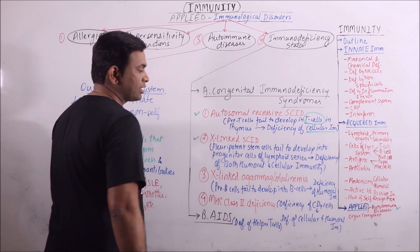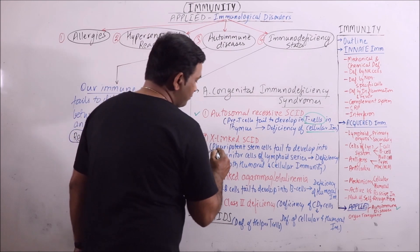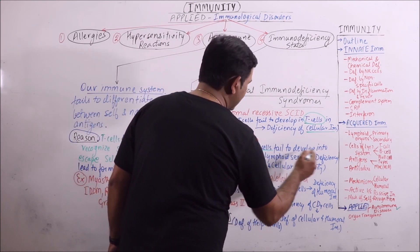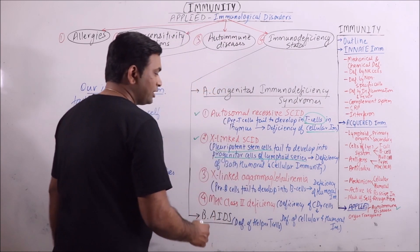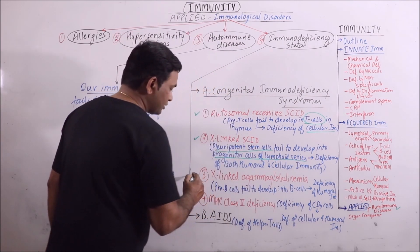X-linked severe combined immunodeficiency. Here pluripotent stem cells fail to develop into progenitor cells of lymphoid series. So here both humoral and cellular immunity are deficient.